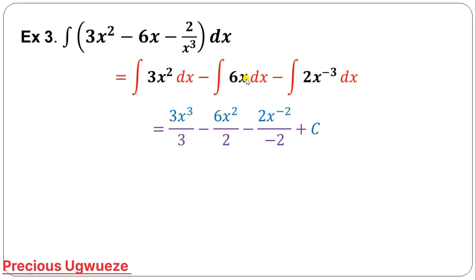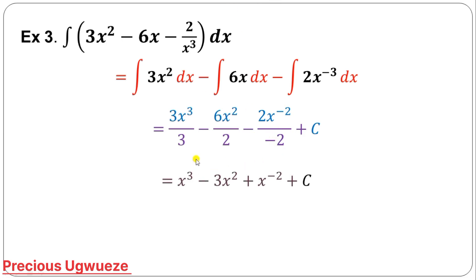Now by the rules of indices, when you bring a power up from the denominator, the power changes to negative. So this term becomes x to the power minus 3. When you integrate it, you add 1 to get minus 2, then divide by that negative 2. Simplifying: the 3 cancels, then the two negatives — negative divided by negative — give a positive, and we add constant C.